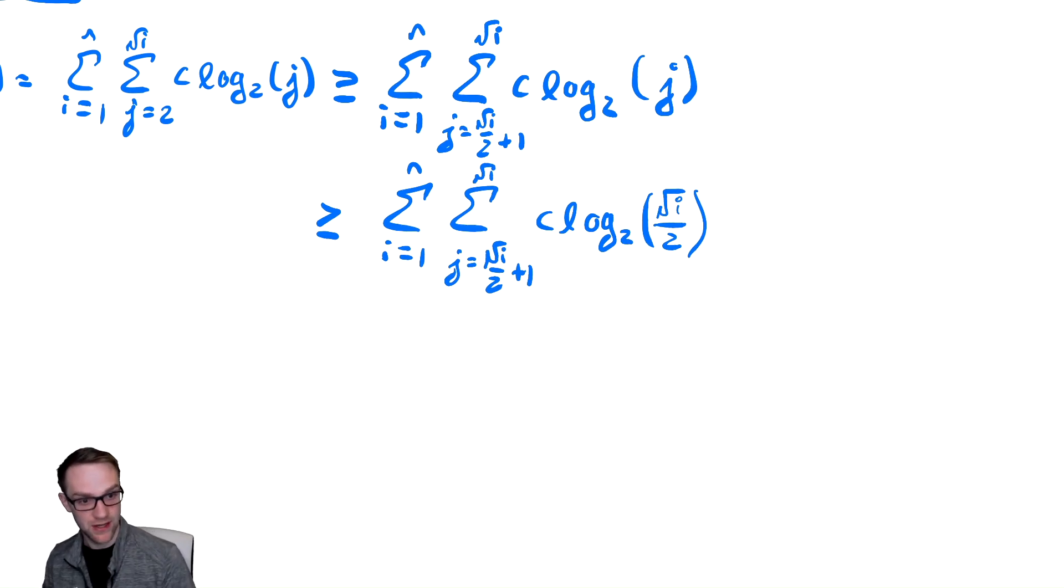And now we can take the inside, which no longer has any j's inside. Remember, you're always looking for the summation index. Therefore, once j has been removed from the problem, that is effectively a fixed quantity, which is being added up a certain number of times, the number of times being the top bound minus the bottom bound plus one.